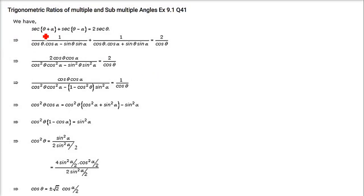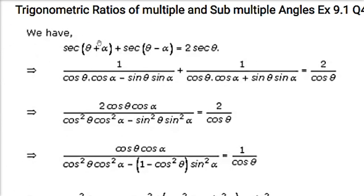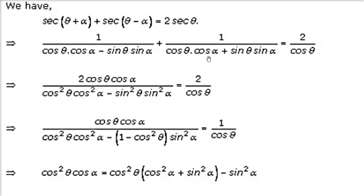Next: sec(θ + α) + sec(θ − α) = 2 sec θ; prove cos θ = ±√(2 cos(α/2)). Rewrite as 1/cos(θ+α) + 1/cos(θ−α) = 2/cos θ. Take LCM and use the cos(θ+α) and cos(θ−α) expansions. The sum gives 2cos θ cos α in the numerator, and the denominator uses the difference-of-squares: cos²θ − sin²α.